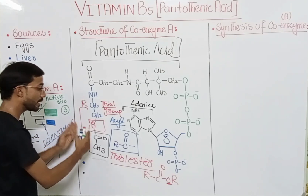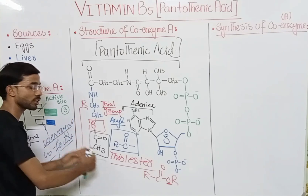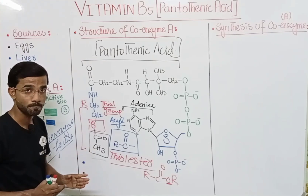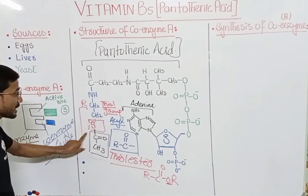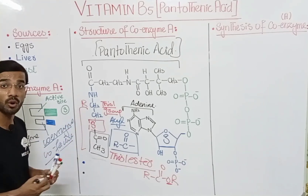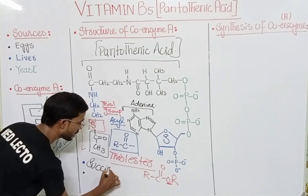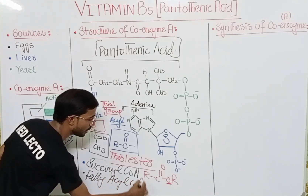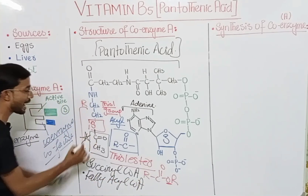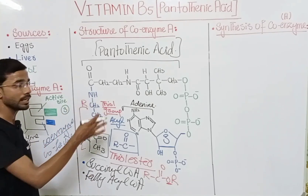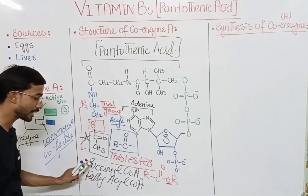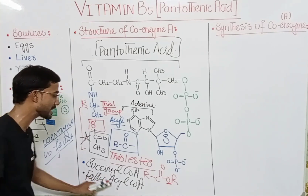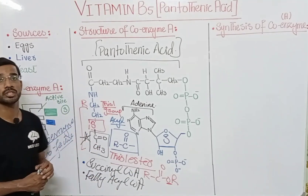The acyl group can easily be released or transferred from one compound to another — that is the main function of Coenzyme A. Different compounds can attach at the thiol group. For example, if the succinyl group attaches, it is called succinyl CoA. If the fatty acyl group attaches, it is called fatty acyl CoA. You just see the replacement of the group at the thiol group.